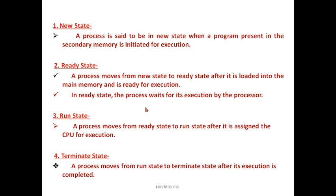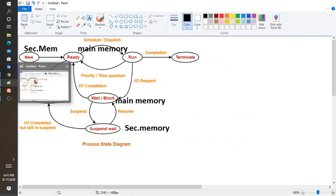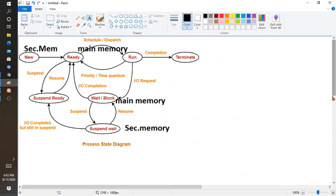Terminate means after completion of the process or execution, it is called termination. Let's go to the diagram for better clarity. Let's assume — what is my process? Writing a C program and typing it in the system — that is not yet a complete process. Once I start to compile and run the program, that determines the process.